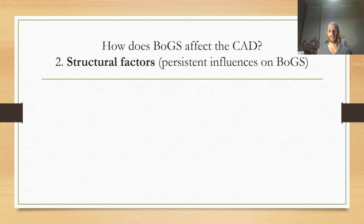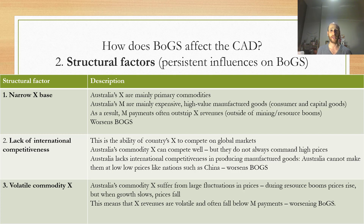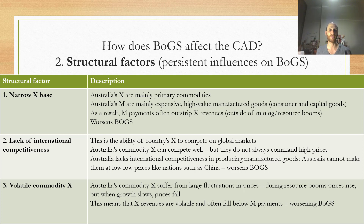Those were the cyclical factors. Now for the structural factors — the persistent influences on BOGS. The first is a narrow export base. Australia exports commodities that are relatively low value-added, which outside of resource booms may not command high prices. But we import consumer and capital goods that are always expensive. Lower value exports versus higher cost imports worsens BOGS and worsens the current account deficit.